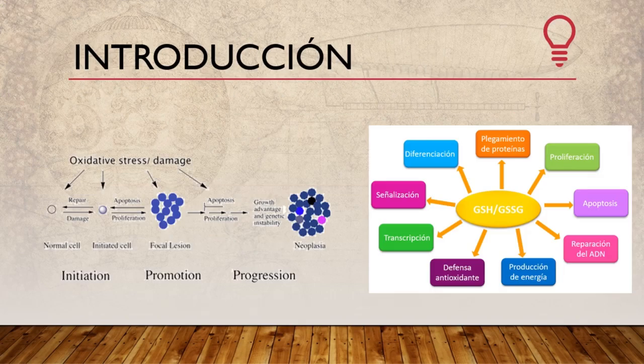A modo de introducción, podemos decir que las células normales sufren daño por estrés oxidante. Estas células proliferan y generan una lesión focalizada que puede dar origen a una neoplasia. Este proceso lleva una etapa de iniciación, otra de promoción y otra de progresión. Nosotros vamos a intentar tratar estas células con nanopartículas de quitosán cargadas con glutatión.